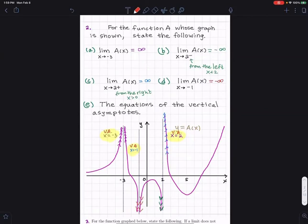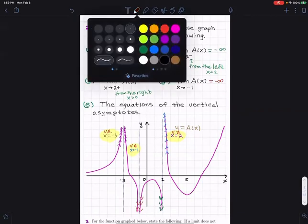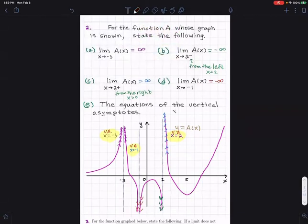No, you should write x equals. I mean, it's not that much extra work, so x equals negative three, x equals negative one, x equals two. Yeah, you should write it like that. Thank you. Okay, we're gonna turn this off.